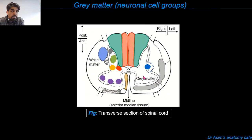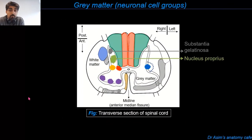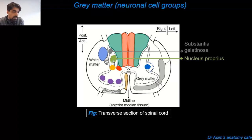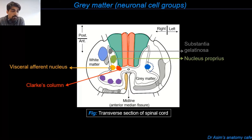Starting with the posterior gray horn, there are four important neuronal cell groups. Two extend throughout the length of the spinal cord, while the other two are restricted to the thoracic and lumbar regions. Those extending throughout include the substantia gelatinosa, shown in gray, and the nucleus proprius, color coded in green. The remaining two — the dorsal nucleus of Clark (Clark's column), shown in red, and the visceral afferent nucleus just lateral to Clark's column, shown in yellow — do not extend throughout the length of the spinal cord.